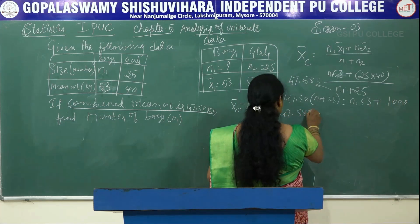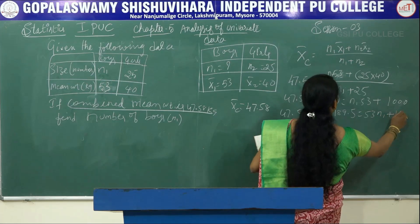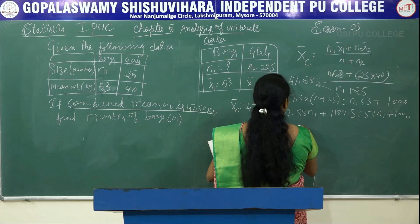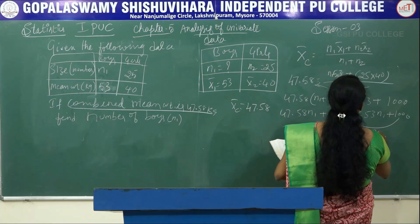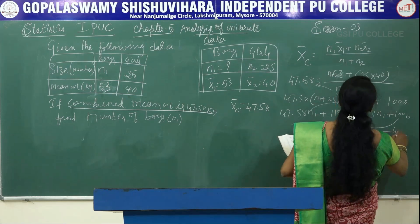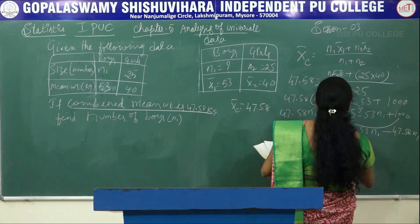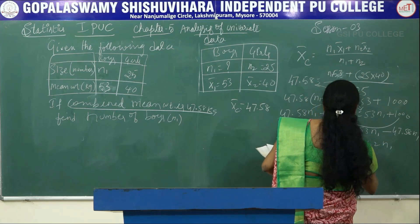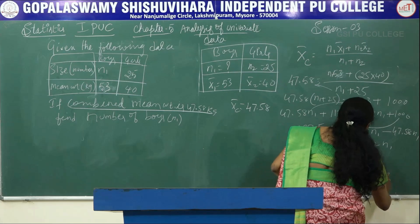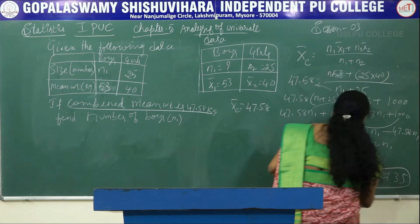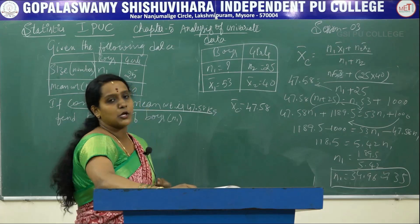Cross multiplying: 47.58·(n1 + 25) = 53·n1 + 1000, so 47.58·n1 + 1189.5 = 53·n1 + 1000. Rearranging: 1189.5 − 1000 = 53·n1 − 47.58·n1, giving 189.5 = 5.42·n1. Therefore n1 = 189.5 / 5.42 ≈ 34.96, approximately 35. The number of boys in the given data is approximately 35.